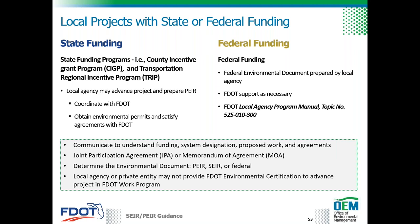For more information on LAP, see FDOT's Local Agency Program manual available on FDOT's procedural document library website. A thorough understanding of funding sources, system designation, proposed work activity, and existing or proposed agreements — such as a joint participation agreement or memorandum of agreement — assists in determining if the project should advance as a PEER, a SEER, or as a federal environmental document. A private or local entity may not provide FDOT environmental certification to advance a project in the work program, and FDOT should not provide certification to a private or local entity.